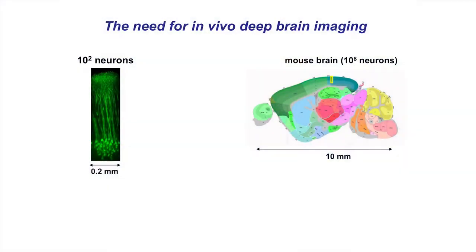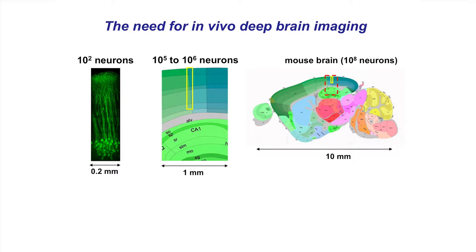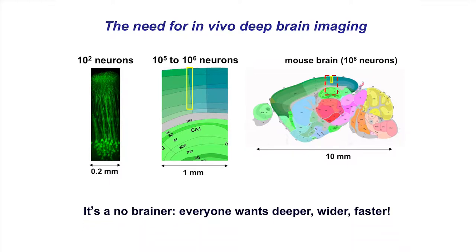First, a brief motivation for why we want to image deep and fast in the brain. If you look at this — this is the sagittal plane of the mouse brain, about one cubic centimeter. Around 2005, the yellow box shows roughly what we can do with high-resolution optical imaging at single-cell resolution. Clearly, you want to image much deeper, much wider, and much faster.